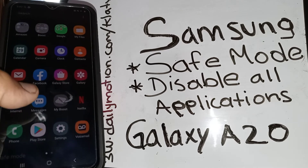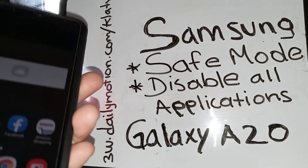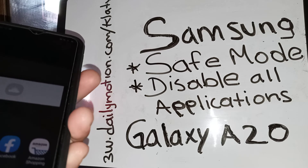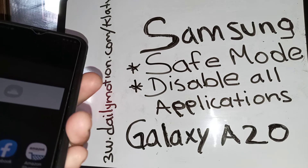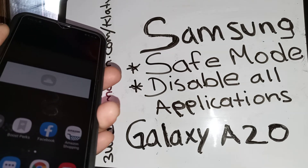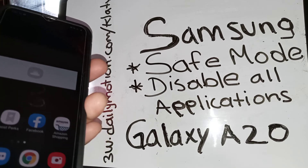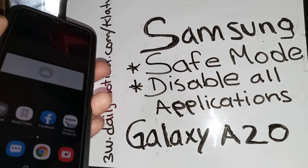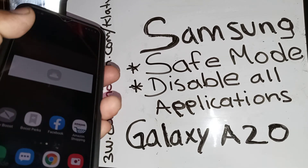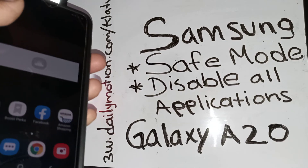In case you're unable to exit safe mode, power down the phone and then press the volume down key as well when the phone powers up. It will prompt you to disable or exit safe mode.